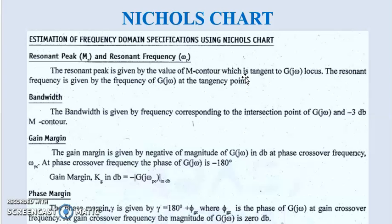The two important concepts for finding stability are the gain margin and the phase margin. The gain margin is given by the negative of the magnitude of G(jω) in decibels at the phase crossover frequency ω_pc, where the phase of G(jω) is −180 degrees. So gain margin K_g in dB equals minus the magnitude of G(jω) in dB. The phase margin γ is given by γ = 180° + φ_gc, where φ_gc is the phase of G(jω) at the gain crossover frequency ω_gc, where the magnitude of G(jω) is 0 dB.